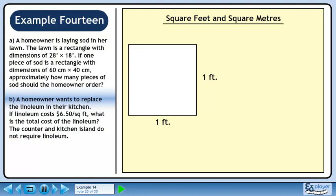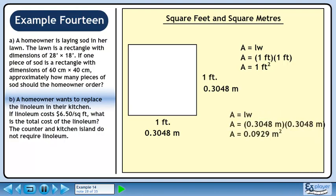This is a 1 foot by 1 foot square. The area of the square is 1 square foot. If we were to measure the square in metric, we would have side lengths of 0.3048 meters. Using the metric side lengths gives an area of 0.0929 square meters.